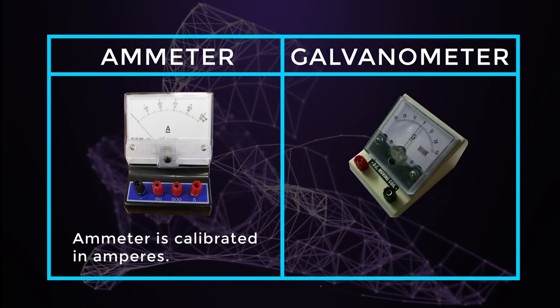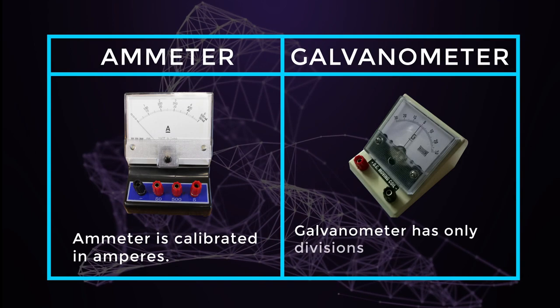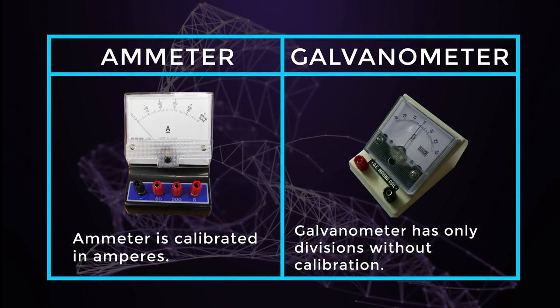Ammeter is calibrated in amperes. Galvanometer has only divisions without calibration.